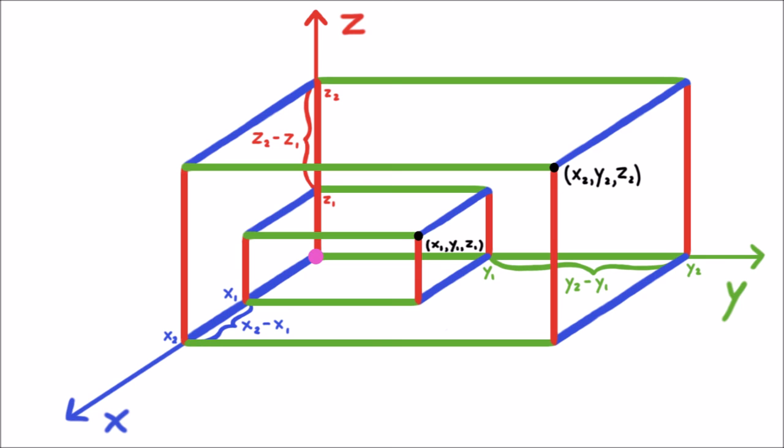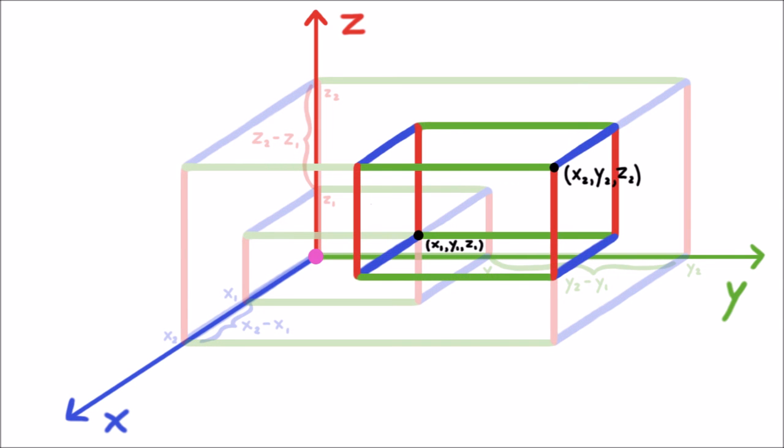Again, let's imagine that all these numbers are positive, though what we're about to do works even if they aren't. So, carefully suspended between our two points, we have a box with one corner at one point and the opposite corner at the other point. The width of this box is x2 minus x1. The length of the box is y2 minus y1 and the height of the box is z2 minus z1.